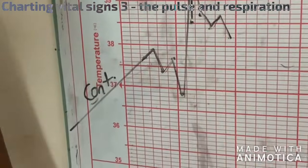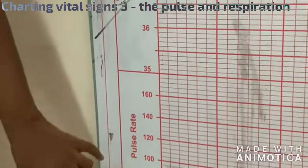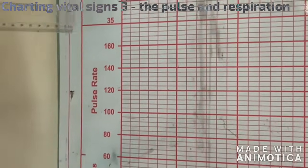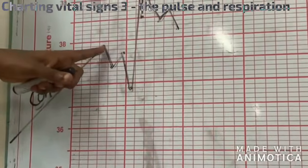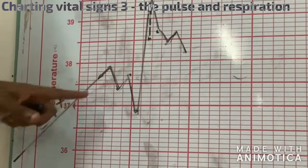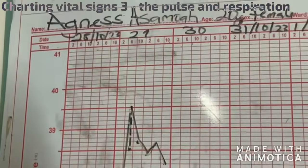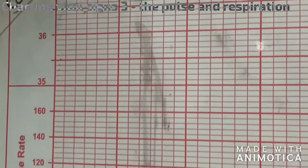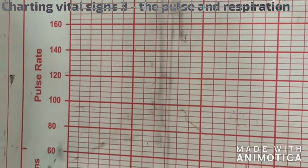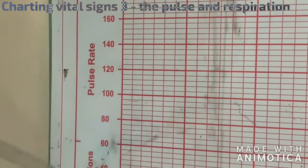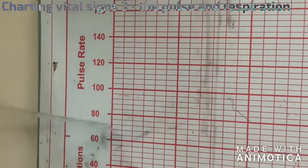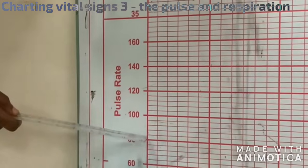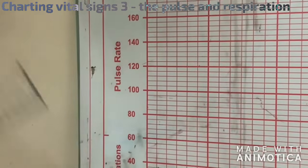We are continuing with charting the pulse from the previous video on temperature. When you check axial temperature at 10 a.m. and it was 37.9, at 2 p.m. it was 37.9. At the same time, the pulse was 72. Now let's look at something. From 60 to 80 within the pulse, even from the respiration to the pulse, 60 to 80 is 20 scores between.